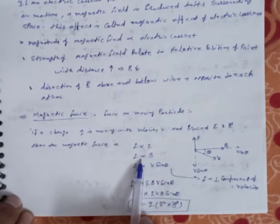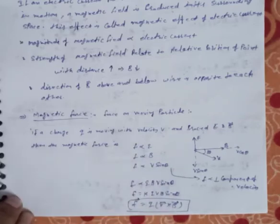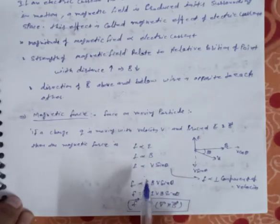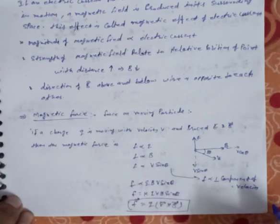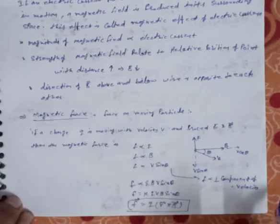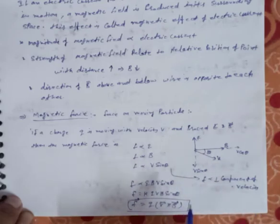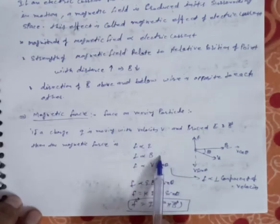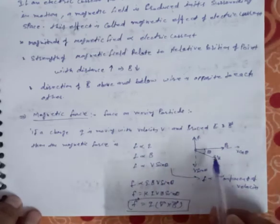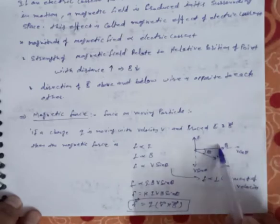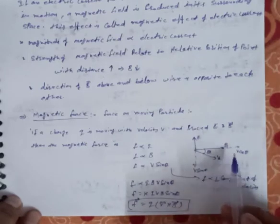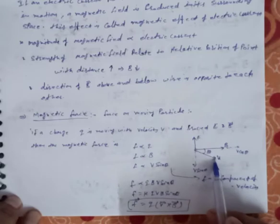This force is also directly proportional to the magnetic field, because current flow generates a magnetic field. Additionally, F is directly proportional to v sin θ. We consider a graphical presentation: a particle moving with velocity v at angle θ to the magnetic field direction.